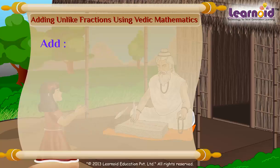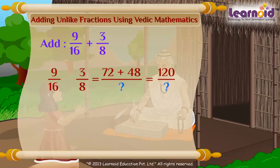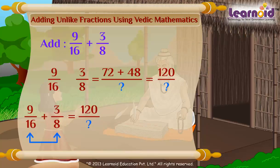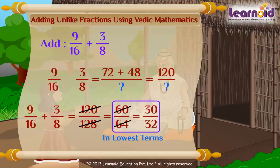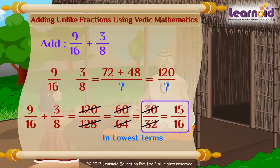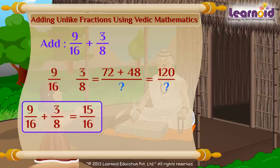Let's check one more example: 9 by 16 plus 3 by 8. To get the numerator of the sum, multiply crosswise: 9 into 8 equals 72, and 3 into 16 equals 48. So, 72 plus 48 is 120. For the denominator, multiply 16 into 8, which equals 128. So the answer is 120 by 128. Now convert it into lowest terms: 120 by 128 equals 60 by 64, which reduces to 30 by 32, and then 15 by 16. So, 9 by 16 plus 3 by 8 equals 15 by 16.